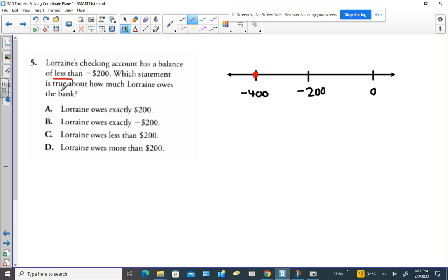Which statement is true about how much Lorraine owes the bank? Now there's this amount that she owes, the green amount, and then there's this amount that she could owe. If she owed $200, she'd owe the blue amount.